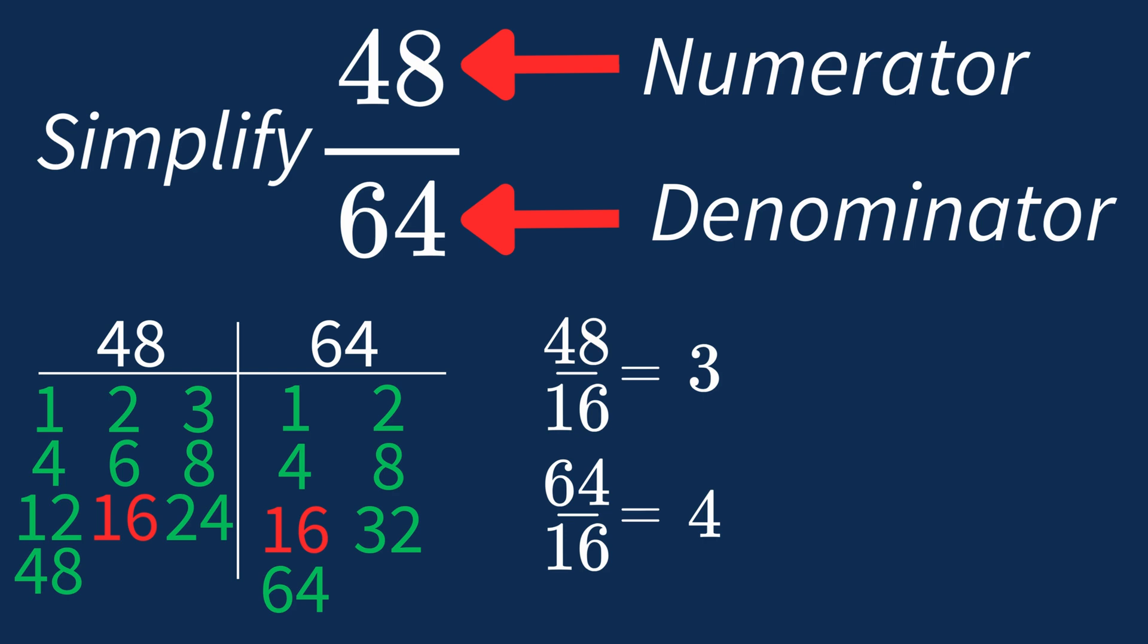So after dividing, the simplified fraction is 3 over 4. And we know that 3 over 4 is in its simplest form, because the only common factor between 3 and 4 is 1. And when 1 is the largest common factor, we know that our fraction has been simplified.